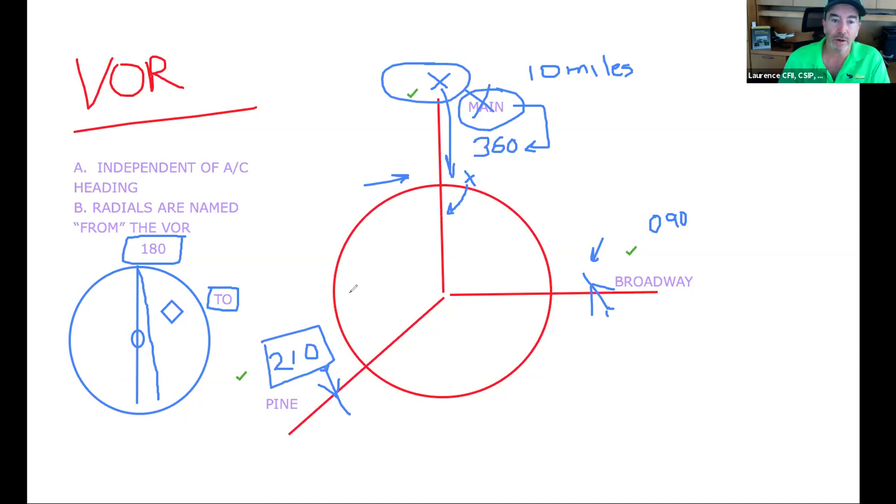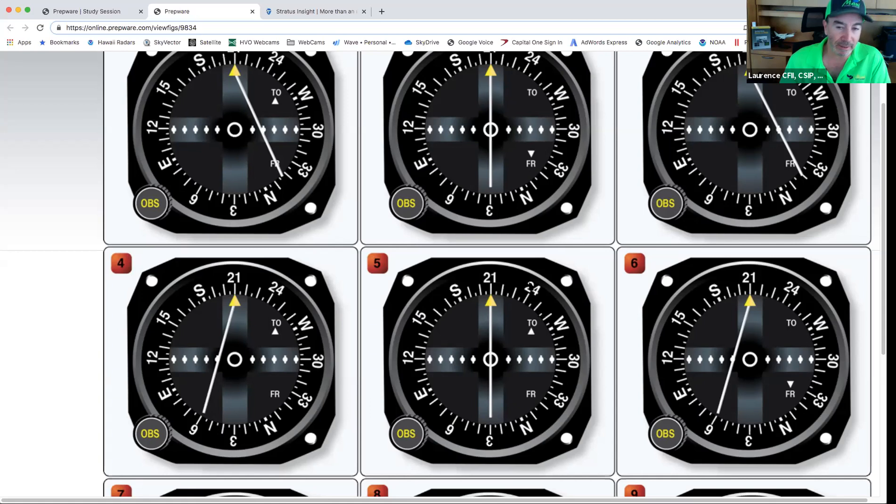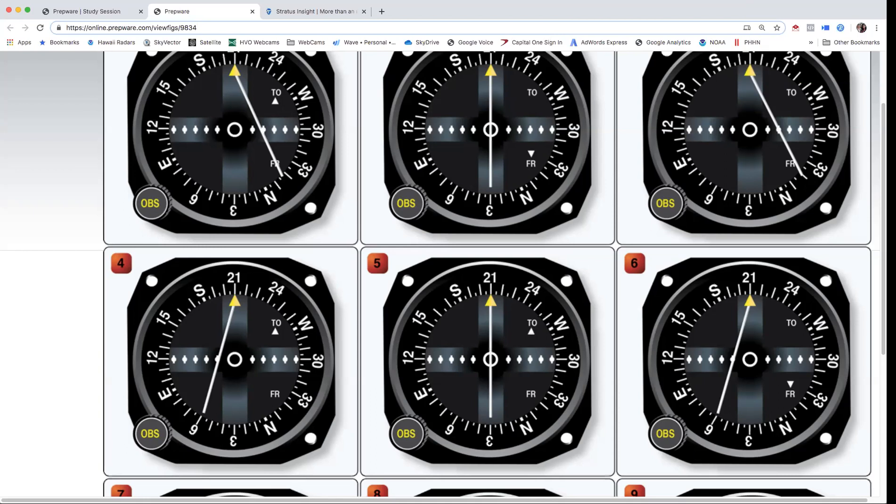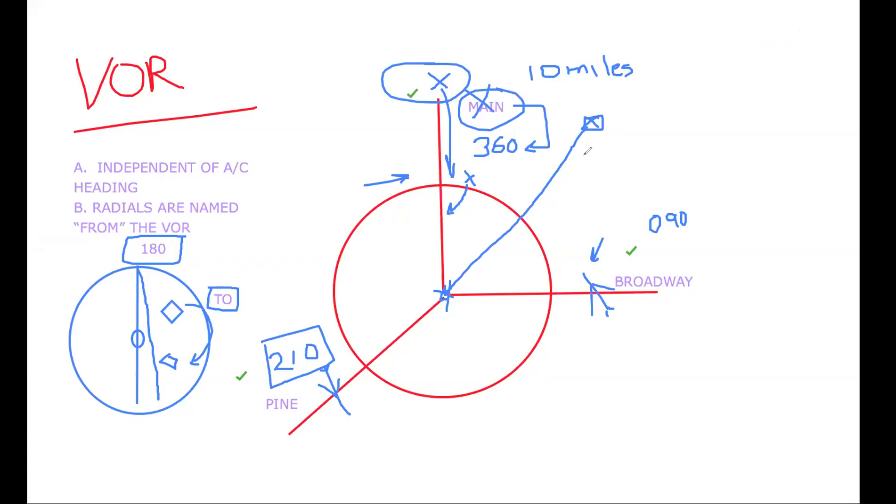He has a 210 radial drawn in, but he doesn't have FROM, he has a TO flag. So that would put him over here. He's going towards the VOR to the 210 radial. Once he crosses this spot, this flag will switch to FROM. So let's go back to the question. What radial is he on? What street is he on? So he's on the 30. Yes, exactly. He's on the 030 radial.